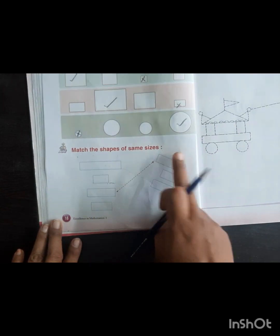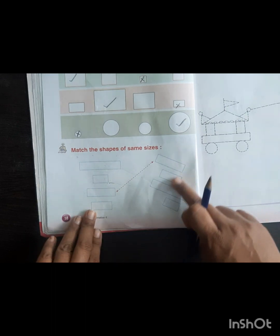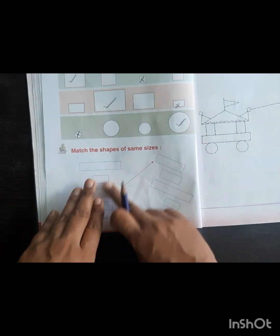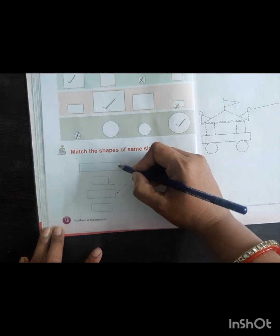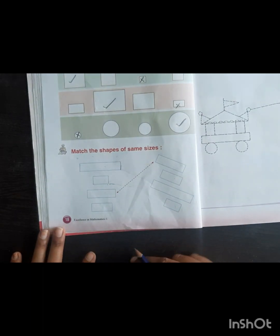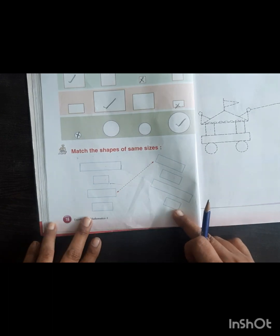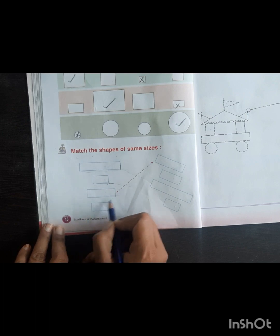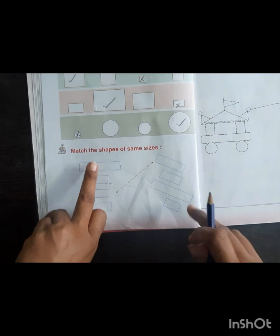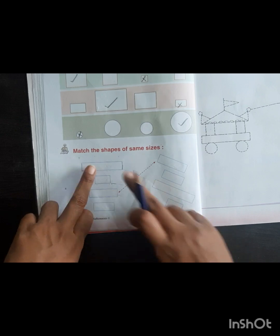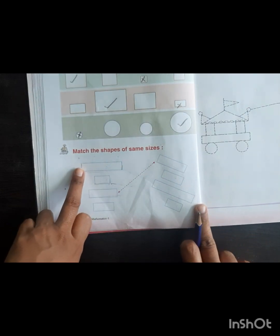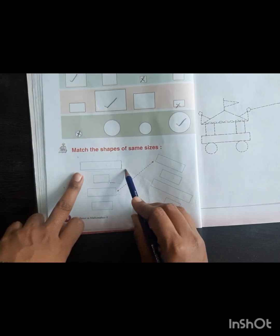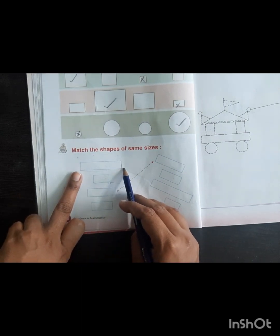Match the shapes of the same sizes. Look here, there are rectangles. All rectangles have the same length, but they all have different breadth. So we have to look at which ones have the same breadth. The largest breadth is this one. And this one. This is the largest rectangle, this is also largest rectangle, so we will match these.